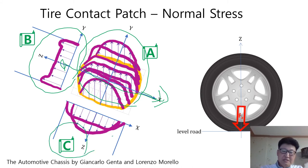Picture C is the side view in the direction of Y-axis. This picture originated in the book, The Automotive Chassis, written by Giancarlo Genta and Lorenzo Morello. To find more information, you can refer to this book.